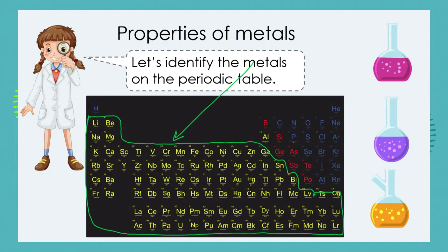There are a lot of them. Remember that you only have to know about the first 20, which means those — and of course that would also include some of the non-metals and some of the semi-metals. But of the metals that you have to know about in detail, we'll be focusing on those six.